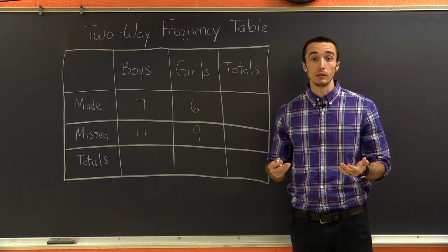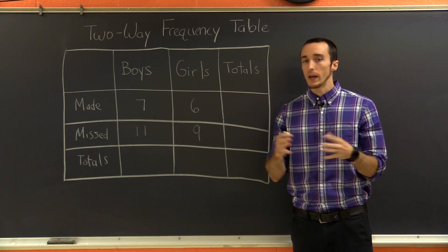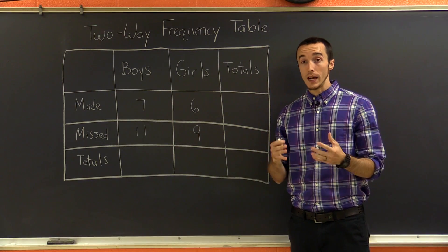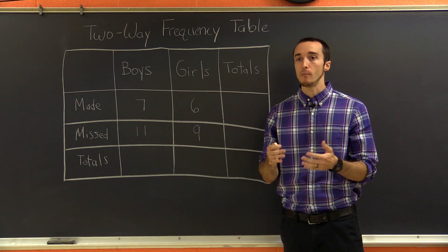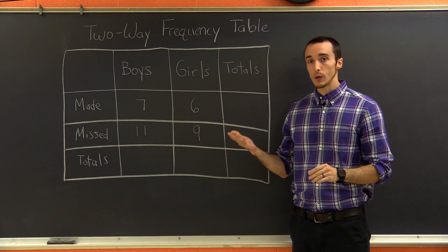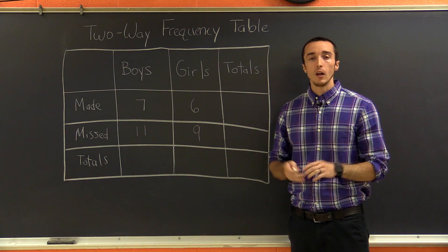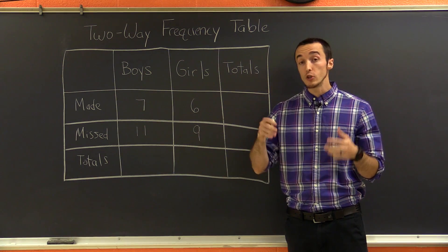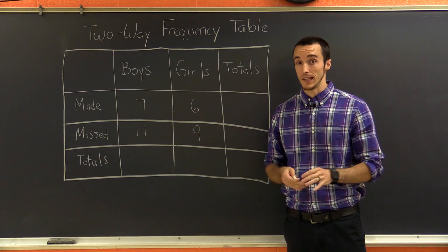Okay, so what is a two-way frequency table? Well, if you remember, a regular frequency table is a way to count or figure out how many of something there is for a certain category. A two-way frequency table is the same thing, but it allows us to keep track of two different types of information at the same time.